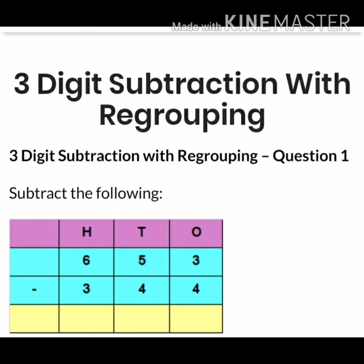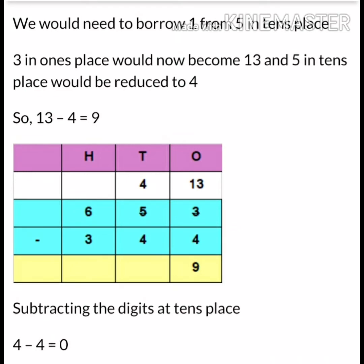Can you see the number 653 minus 344? Now we would need to borrow 1 from 5 in tens place. Can you see that? 3 in ones place would now become 13 and 5 in tens place would be reduced to 4. So now in ones place we'll subtract 4 from 13. Means 13 minus 4 will give you 9.